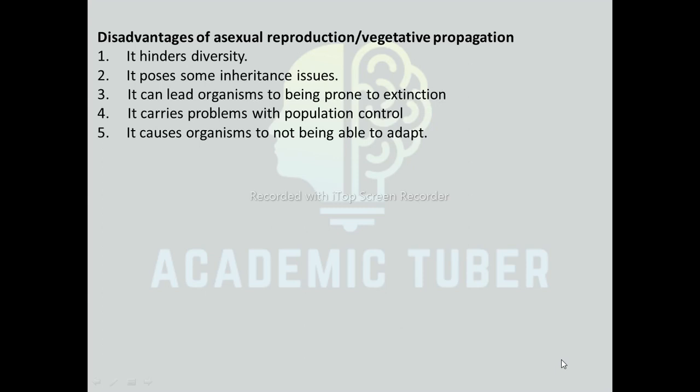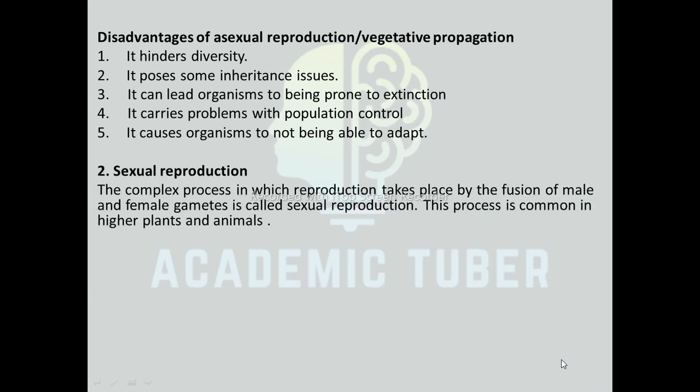Disadvantages of asexual reproduction: It reduces diversity since offspring are genetically identical to their parents. It poses inheritance issues, can lead organisms toward extinction, causes problems with population control, and organisms cannot adapt to new environments. Sexual Reproduction: The complex process in which reproduction takes place by the fusion of male and female gametes is called sexual reproduction. This process is common in higher plants and animals.